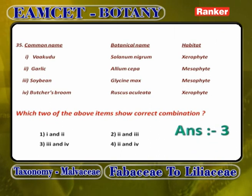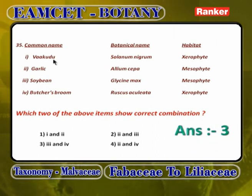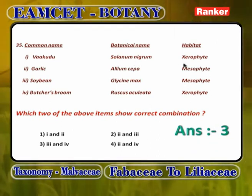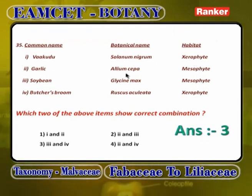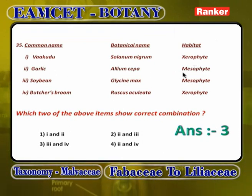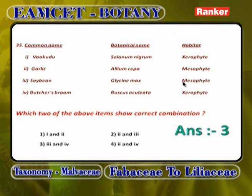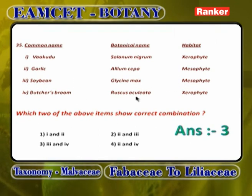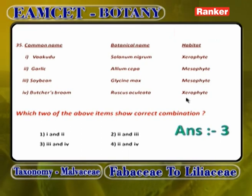Three-column tabular form: Vakudu Solanum nigrum xerophyte — wrong. Garlic Allium cepa — wrong; it should be Allium sativum. Soyabean Glycine max mesophyte — correct. Butcher's broom Ruscus aculeatus xerophyte — correct. Answer is 3 and 4.